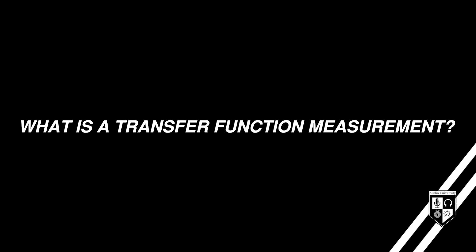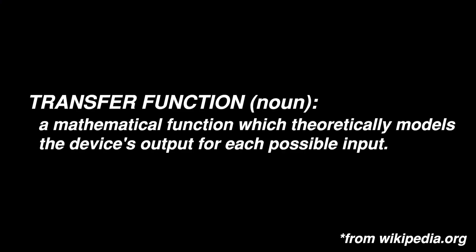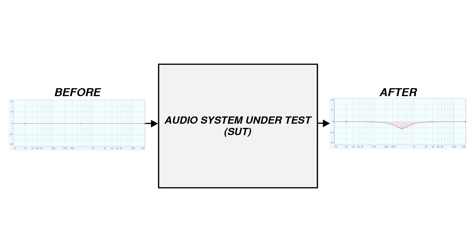The method we'll use in this video to determine the frequency response of a system is called a transfer function measurement. A transfer function of a system is a mathematical function which models the system's output for each possible input. In this case, we'll be measuring how a system responds to various input frequencies. By sending each frequency equally to the system's input and measuring the signal again at the output of the system, we should in theory be able to determine the effect that the system has on the signal.